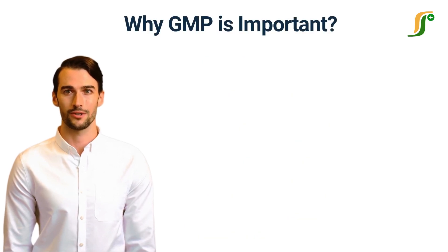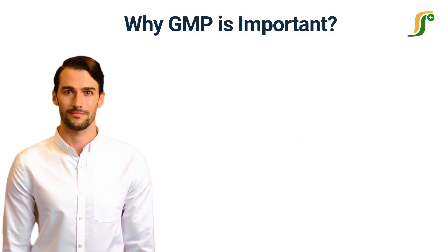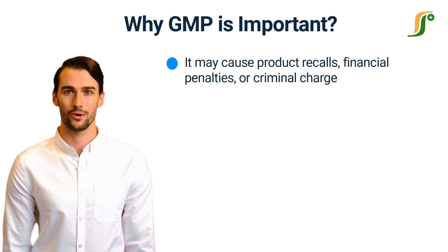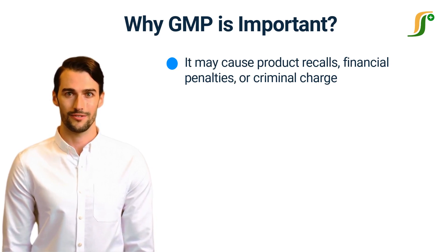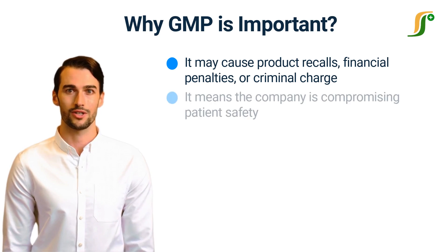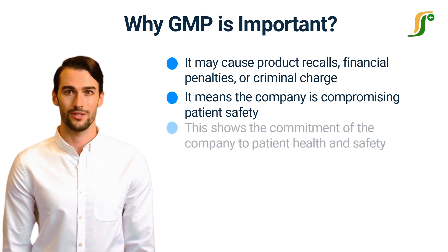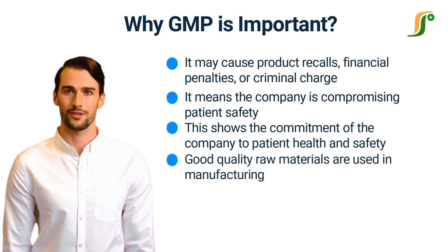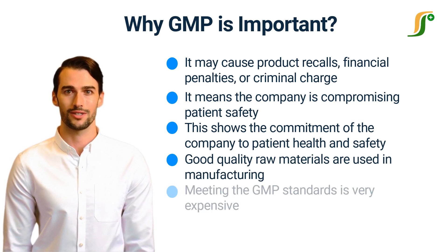Now, why is GMP important for companies? As we have gone through the requirements of GMP in pharmaceuticals, we can say if a company doesn't follow GMP regulations, it may cause product recalls, financial penalties, or criminal charges. The safety of the patients must be a top priority for pharmaceutical manufacturers. Not following the GMP regulations means the company is compromising patient safety. When a company follows the GMP norms, this shows the commitment of the company to patient health and safety. It ensures that good quality raw materials are used in manufacturing, and products are free from contamination and dangerous ingredients.